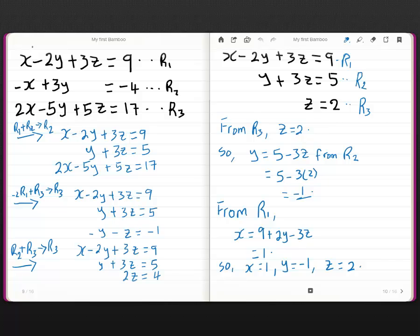So if I were to substitute for z in row 2, I end up with y equals 5 minus 3z, i.e. y equals 5 minus 3 times 2 and that should give me negative 1. Now I know the value for y, the value for z, I can substitute both in row 1 and I end up with x equals 1. Now my solution set is x equals 1, y equals negative 1 and z equals 2. Very easy. So once I have a system in this form, which is known as the row echelon form, it's very easy to solve the system. We do that by back substitution.